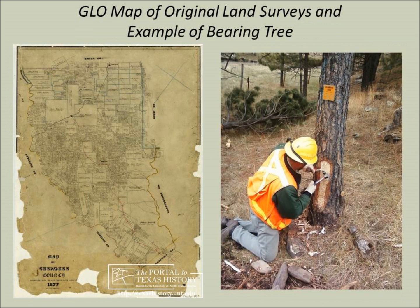Here we see a copy of a very old Texas General Land Office official survey map of Cherokee County, in which the 640-acre patents in this court case reside. And to the right, you see a modern-day surveyor not only locating but uncovering the original scribe that was made on a bearing tree or marked tree. This tree located a property corner that was called for in the field notes.